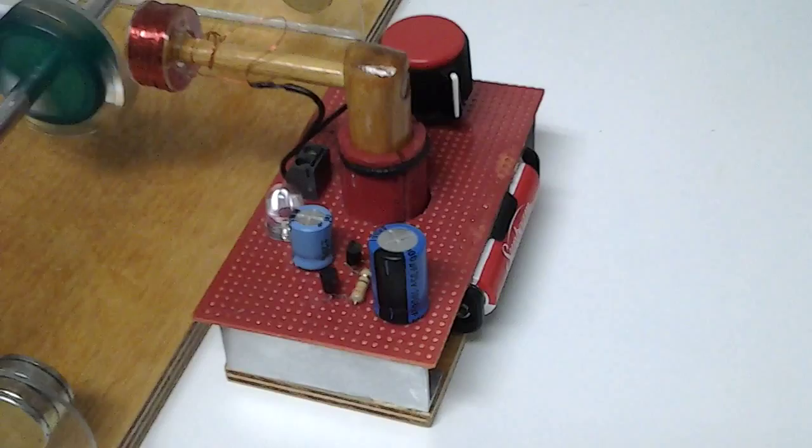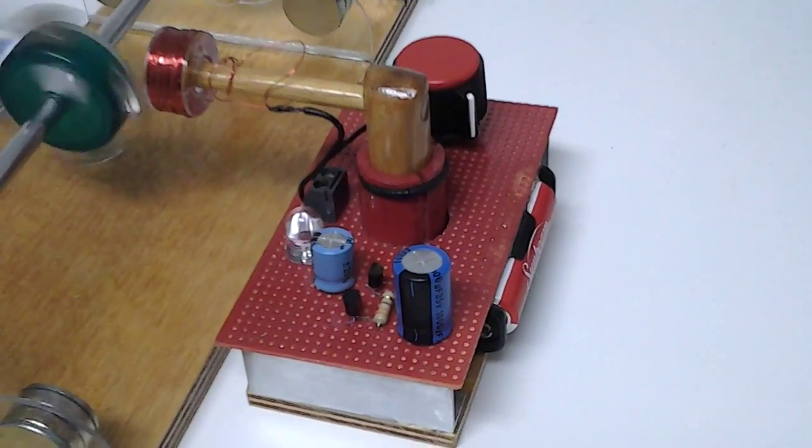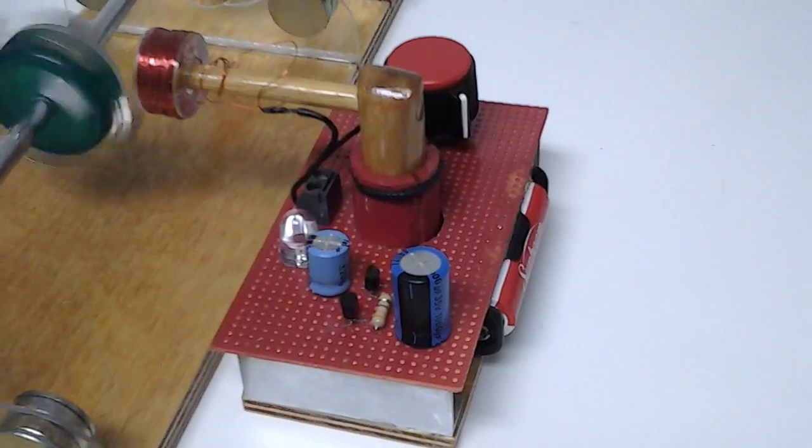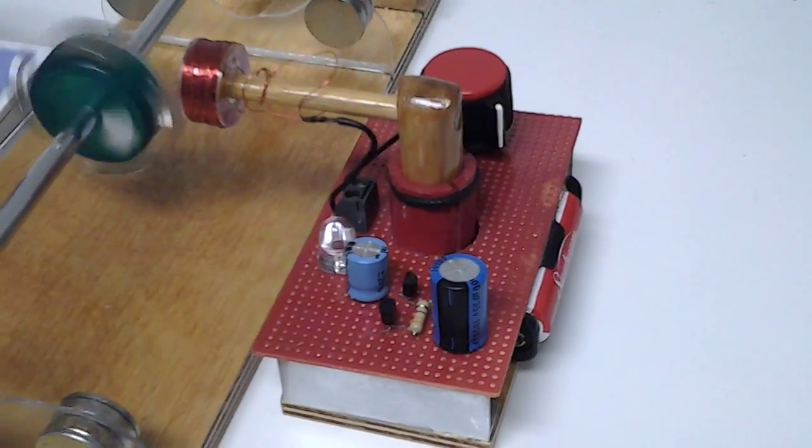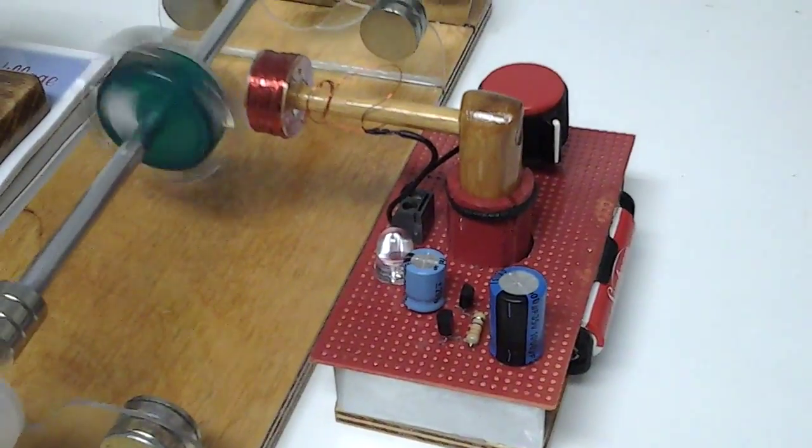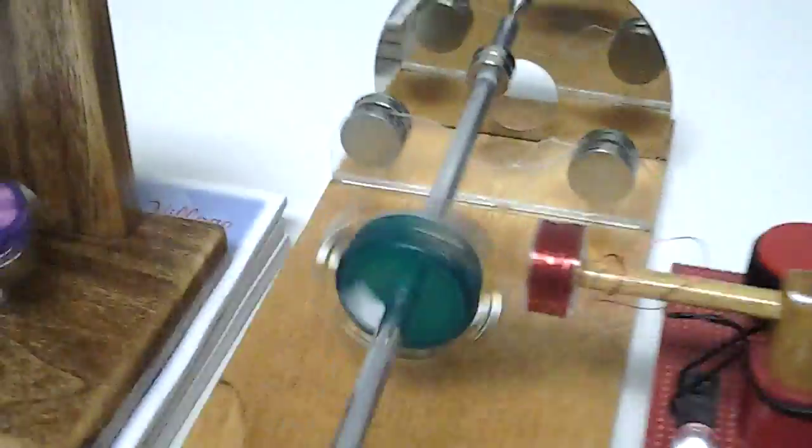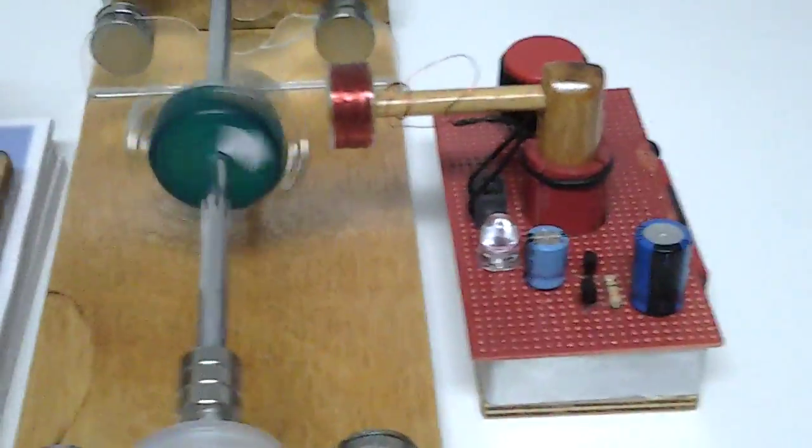This is a circuit. I believe I got this from Smart Creations. Two transistors, a resistor, a couple of capacitors, and a single coil. And that's turning that rotor there.